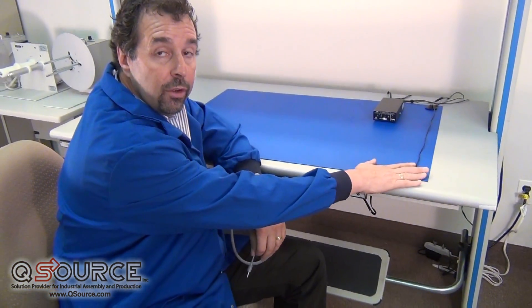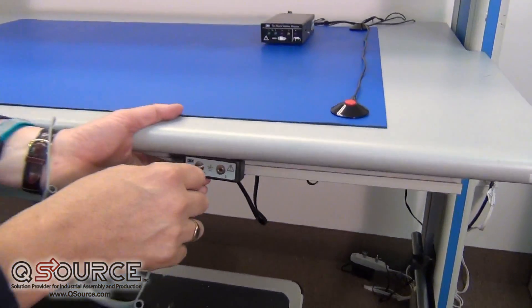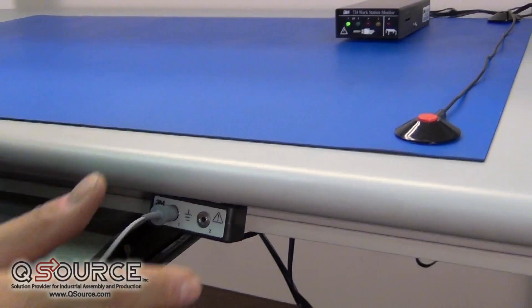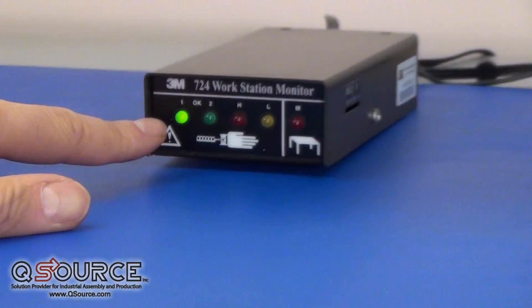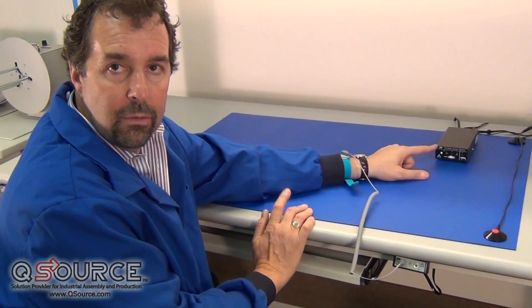Not only does it monitor the work surface at all times, it also monitors two operators. If I plug my wrist strap into operator number one, you see that it's green. If for some reason I have high skin resistance or I'm not properly wearing my wrist strap,